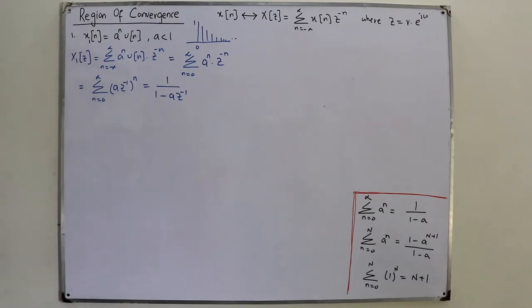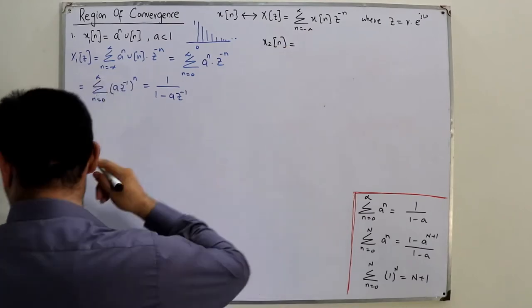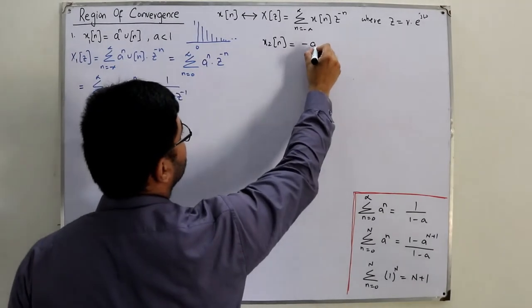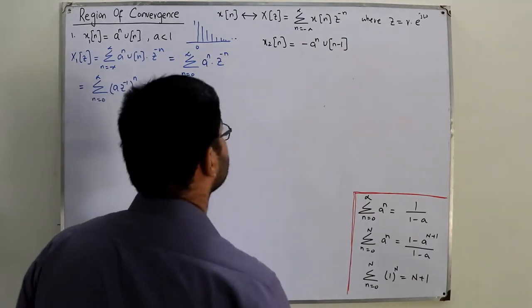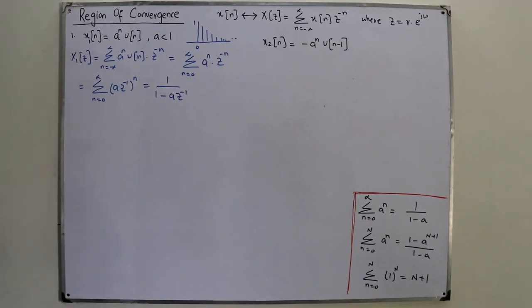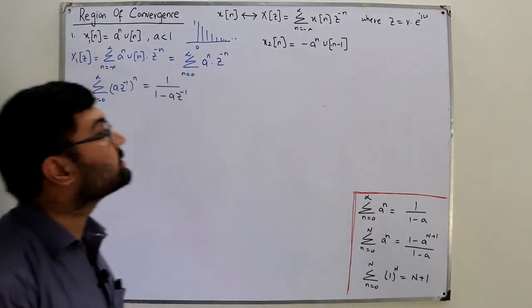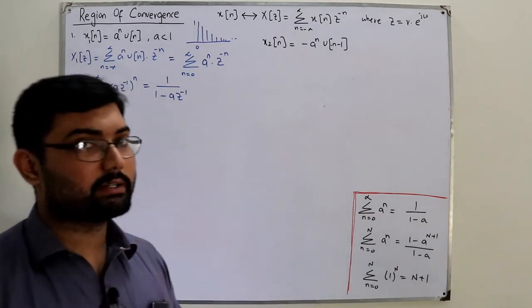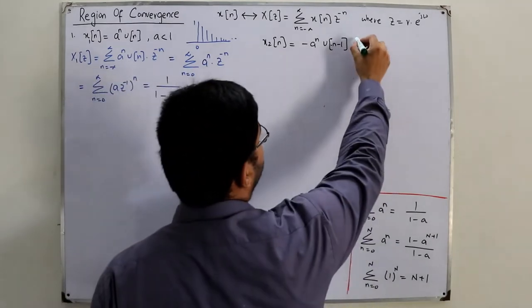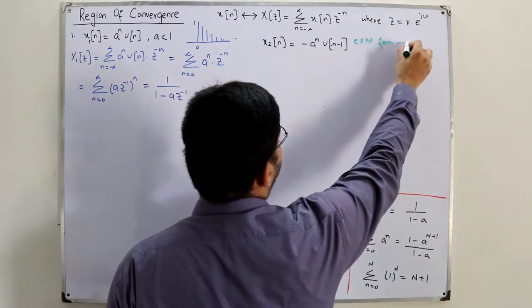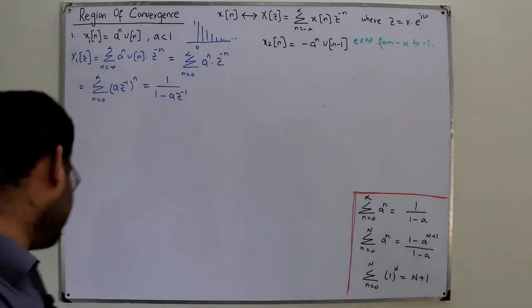For the second question, x2(n) = −a^n · u(−n−1). The function u(−n−1) is a time-reversed, time-shifted signal, and it exists from minus infinity to minus 1. This means it is a left-sided signal.